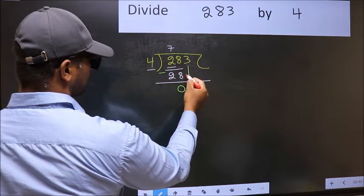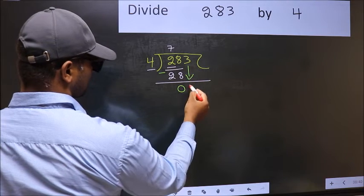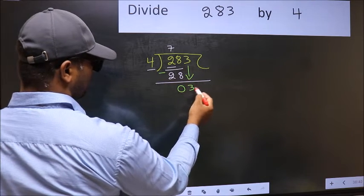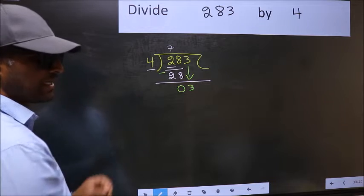After this, bring down the beside number. So, 3 down. After this step, the mistake happens.